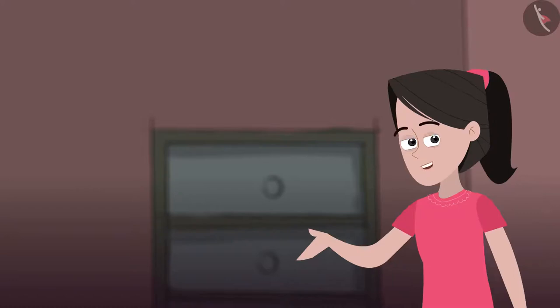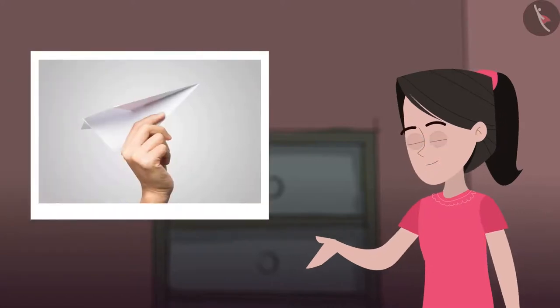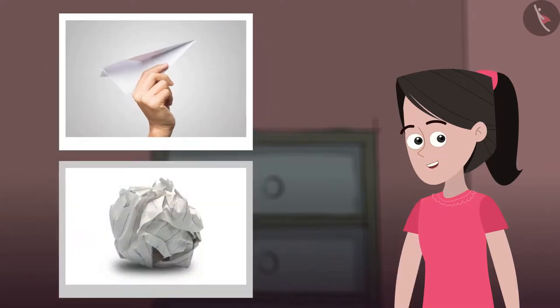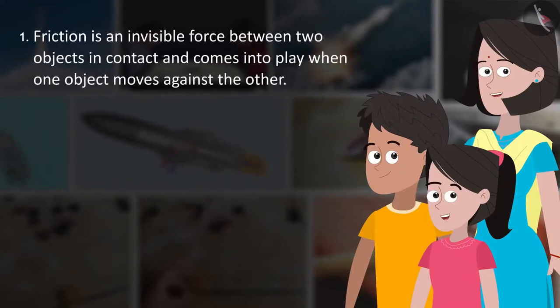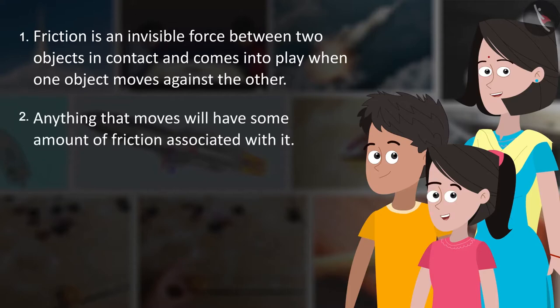Friends, do you want to see how the pointed shape works better in reducing friction than a regular non-pointed shape? Take two sheets of paper. Make a paper plane using one sheet and make a paper ball out of the second sheet. Now throw the two objects in a forward motion. Which object goes further — the plane or the ball? Let us summarize our learning. Friction is an invisible force between two objects in contact and comes into play when one object moves against the other. Anything that moves will have some amount of friction associated with it. Lubrication reduces friction. Aerodynamic shape reduces friction.